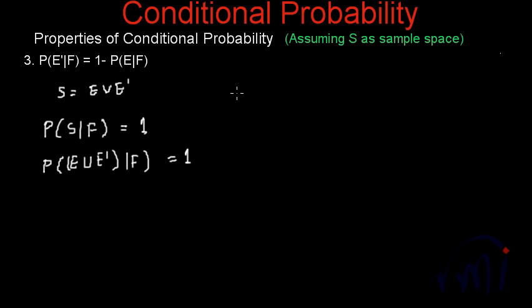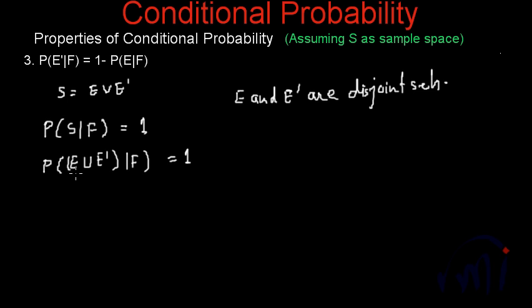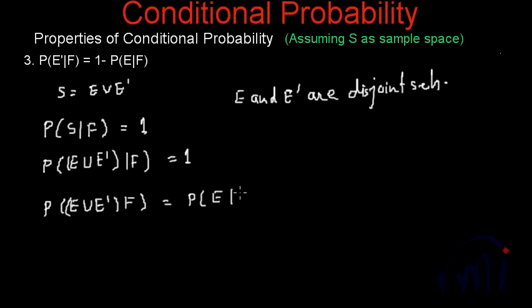And we know E and E dash are disjoint sets. That means the probability of E union E dash given F has already happened will actually be equal to the probability of E given F has already happened, plus the probability of E dash given F has already happened.